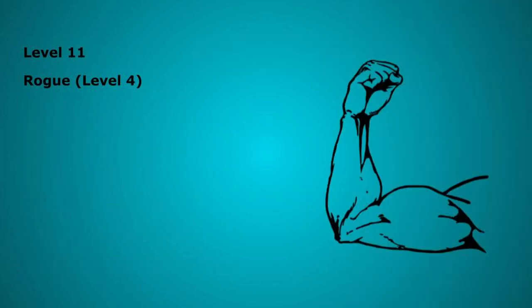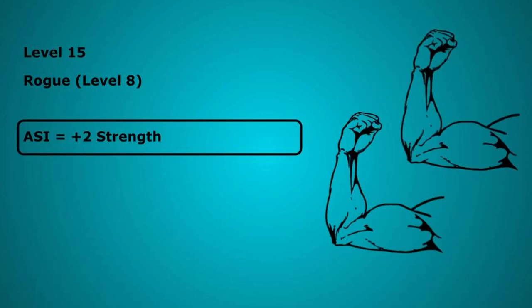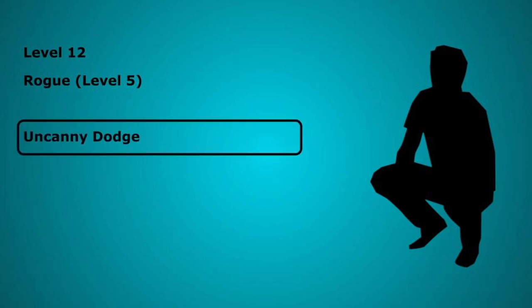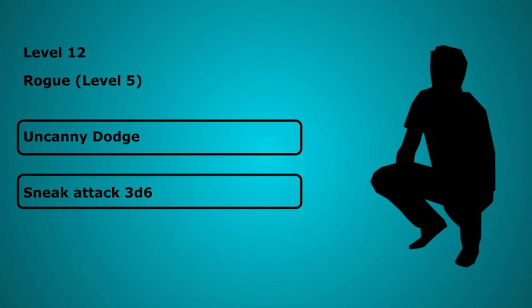Level 11 we take our 4th level in Rogue where we get another ability score increase adding 2 to our strength taking it to 18. Level 12 we take our 5th level in Rogue, here we get the uncanny dodge feature. This lets you spend your reaction when you are hit with an attack you can see to halve the damage against you. 5th level Rogues also increase their sneak attack damage to 3d6.